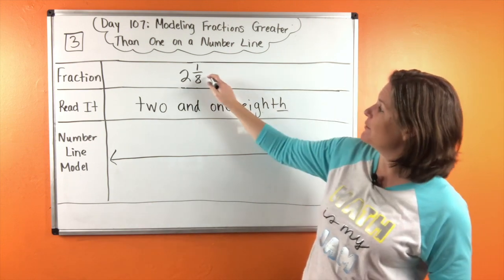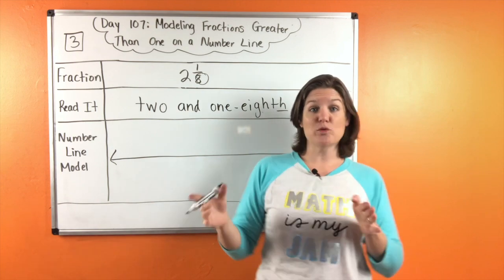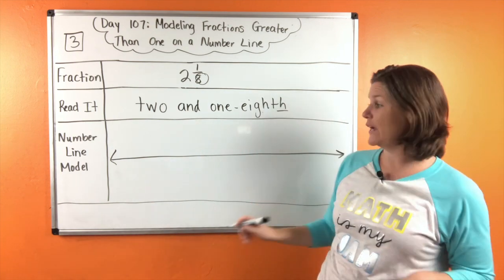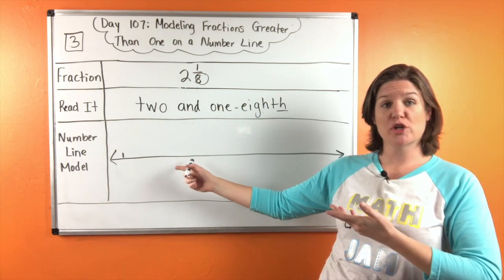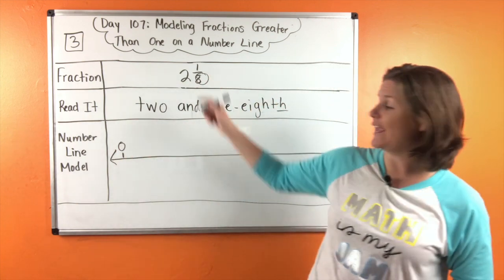And because we have a denominator of eight, that's how many jumps are between each hole, right? So let's start right here. Our starting point is zero, and we need eight jumps.